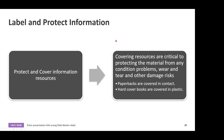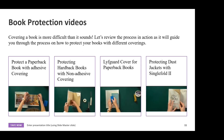How do we protect our books? We cover our information resources, and it's critical to protecting the material from any conditions, wear and tear, or other damage. Paperback books we cover in contact paper and hardcover books we cover in plastic. There's a special plastic used in libraries with special tape and a special contact paper. Covering a book is more difficult than it sounds.